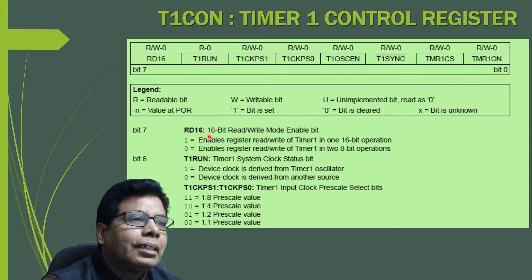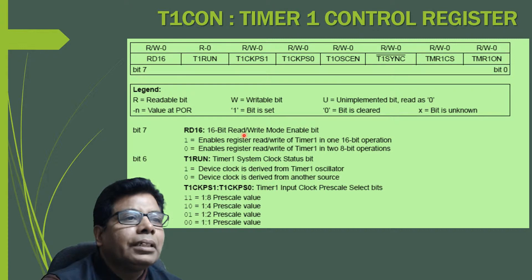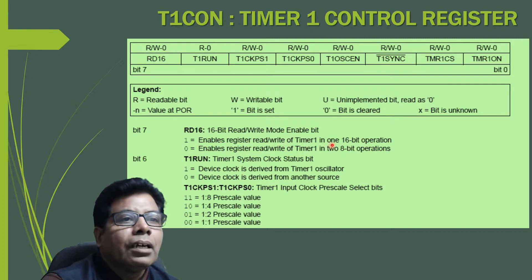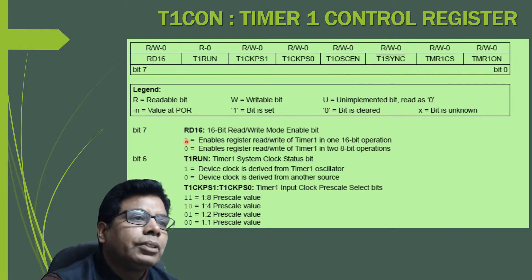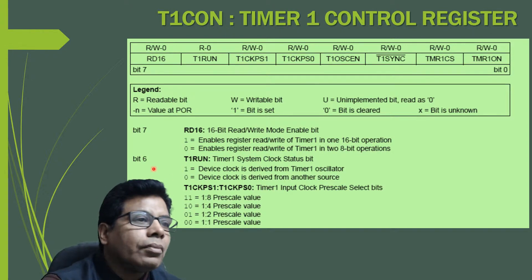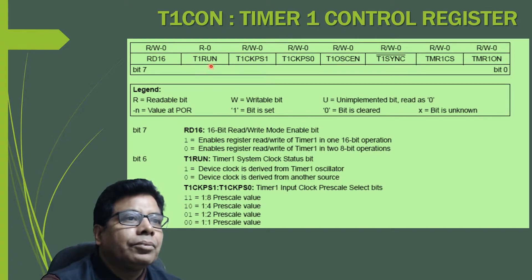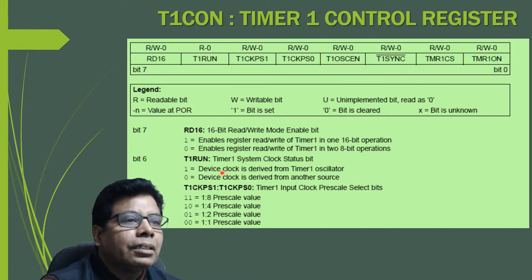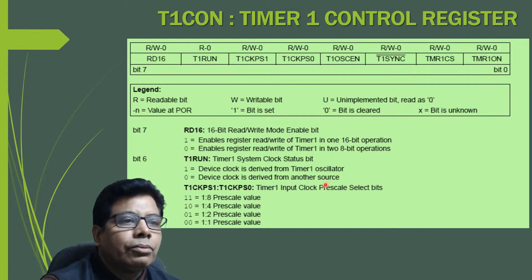Bit 7 is RD16 — the 16-bit read/write mode enable bit. If it is set, it enables 16-bit operation of Timer 1. If it is 0, Timer 1 operates in two 8-bit operations. Bit 6 is T1RUN, the Timer 1 system clock status bit. If it is 1, the device clock is derived from the Timer 1 oscillator; if 0, the device clock is derived from another source.